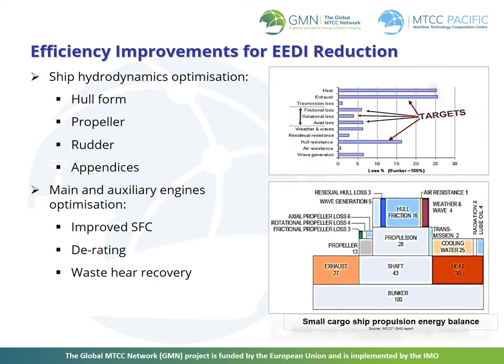The following energy efficiency measures can further reduce EEDI. For the optimization of ship hydrodynamics, the following can be helpful: an optimized hull form design, a high efficiency propeller, rudder and appendices. For the main and auxiliary engines, optimization can be improved for specific fuel consumption. The engine can also be derated and a waste heat recovery system can be added.